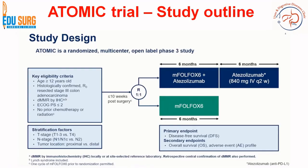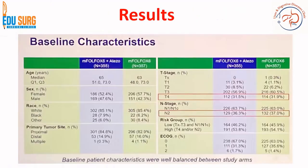The treatment regimen: patients were randomized, and therapy had to start within 10 weeks of surgery. One arm received Folfox with Atezolizumab followed by 6 months of Atezolizumab alone; the other arm received modified Folfox-6 for 6 months. The primary endpoint was disease-free survival and secondary endpoints were overall survival and adverse event profile.